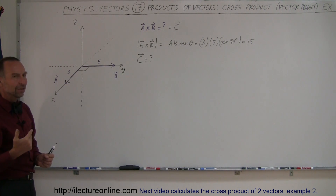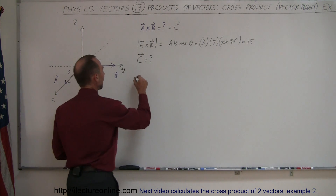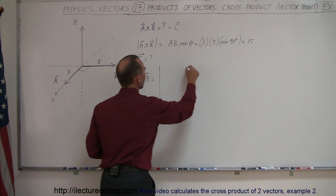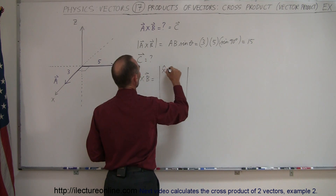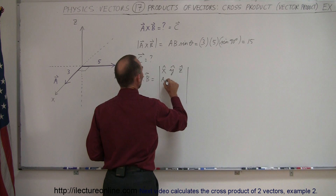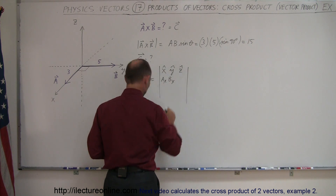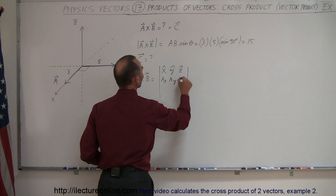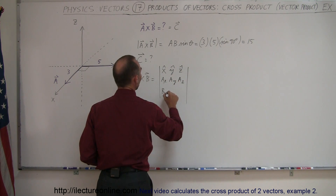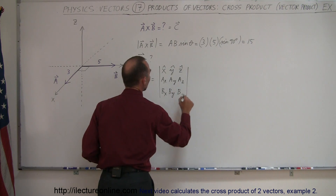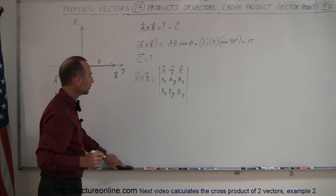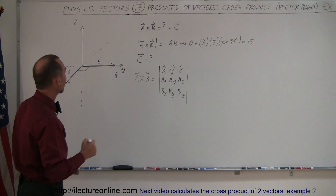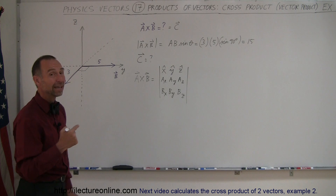Now let's verify this using the determinant method. A cross B is equal to the determinant with unit vectors x, y, z in the first row; the components of A — a_x, a_y, a_z — in the second row; and the components of B — b_x, b_y, b_z — in the third row.